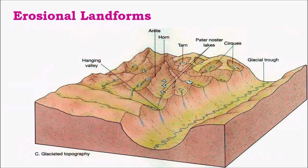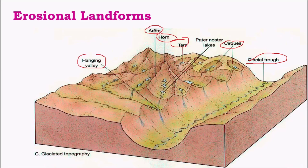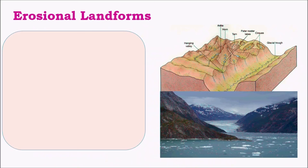Coming to erosional landforms associated with glaciers, the major ones are: glacial trough, cirques, tarn lakes, horns, arêtes, hanging valleys, and waterfalls. Let's take a look at all these erosional landforms in detail.